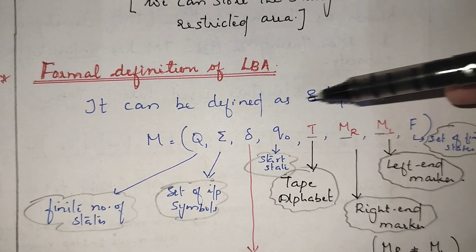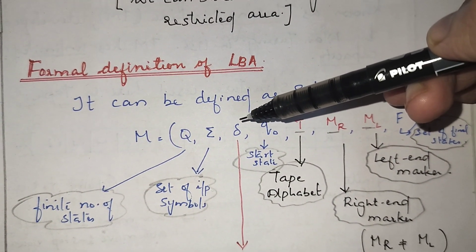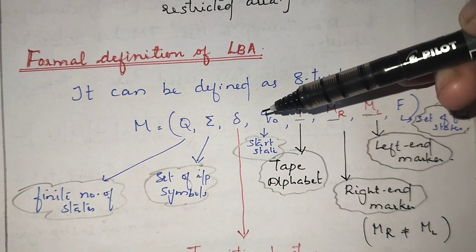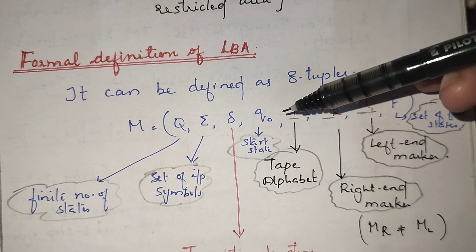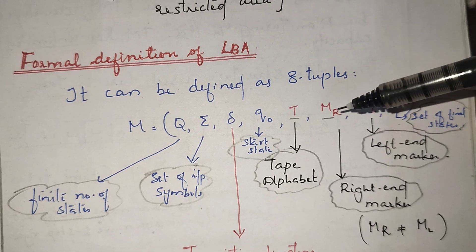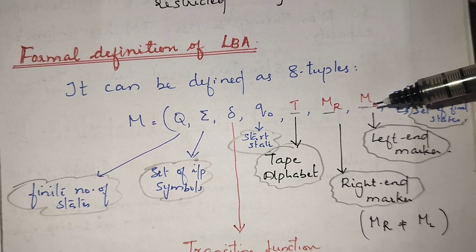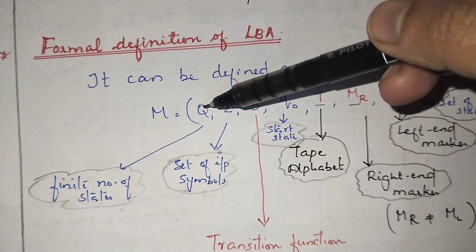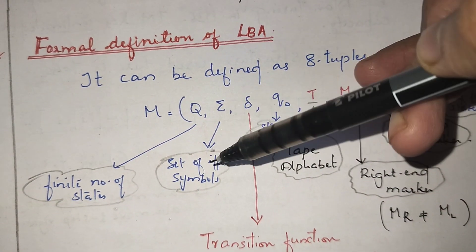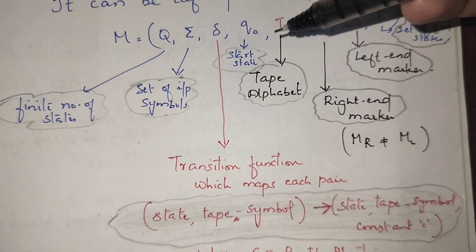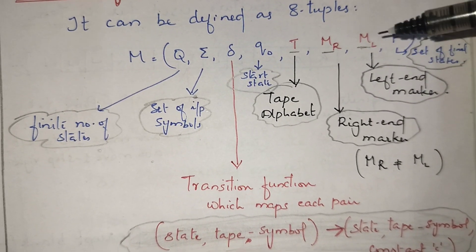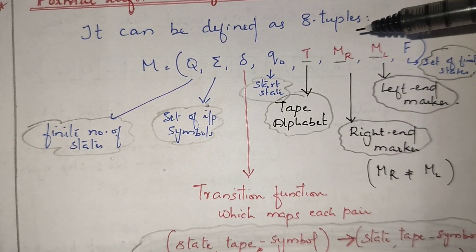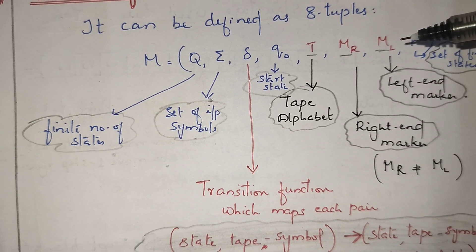Linear bounded automata is represented using 8 tuples. Normally, automata like DFA and NFA are represented using 5 tuples: Q, sigma, delta, Q0, F. Here we use Q, sigma, delta, Q0, F along with 3 more extra components. One is the tape alphabet T, and then we have two end markers — the right end marker and the left end marker, which are not equal to each other. Q is the finite number of states, sigma is the set of input symbols, delta is the transition function, Q0 is the starting state, and F is the set of final states. Additionally, we use the tape data structure with tape alphabet and two end markers.